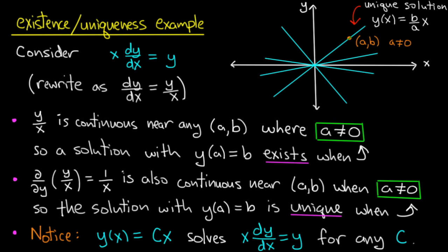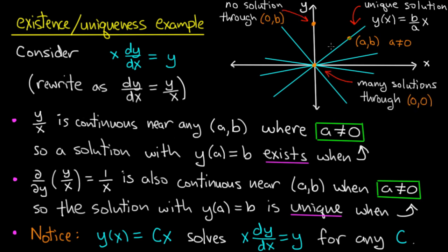Now it's interesting to think about what happens on the y-axis, where a equals 0. The hypotheses of the existence uniqueness theorem are not satisfied, so anything can happen. In fact, the two things that could go wrong do go wrong. If I look at points where b is not 0 — a point up here on the y-axis — and I wanted to pass a line y(x) equals cx through that point, that line would need to be vertical, so there are no solutions passing through such points.